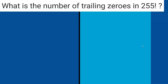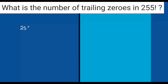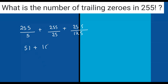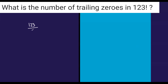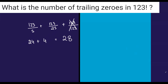When you have 255 factorial: 255 ÷ 5 = 51, 255 ÷ 25 = 10, 255 ÷ 125 = 2. We do not go further because 625 is too large. So 51 + 10 + 2 = 63 trailing zeros. For 123 factorial: 123 ÷ 5 = 24, 123 ÷ 25 = 4. We don't take 125 because 123 ÷ 125 is less than 1. So 24 + 4 = 28 trailing zeros.